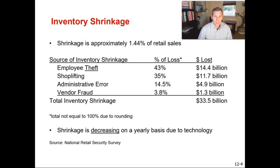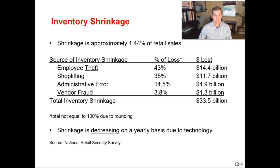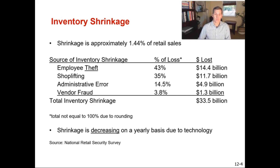Inventory shrinkage is approximately 1.4% of retail sales every year. When I started teaching this course many years ago, that number was closer to 3%, but it has been getting smaller mainly because of technology. Whether it's employee theft, shoplifting, or administrative error, inventory shrinkage is getting better thanks to GPS tags on products, security cameras, and other technology that makes it harder to steal. And this isn't just retail — inventory shrinkage happens everywhere, so it's very important to keep your stock rooms secure.